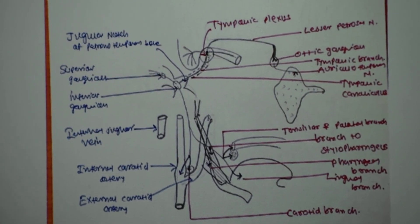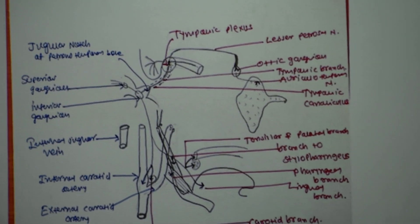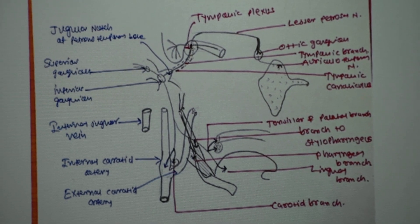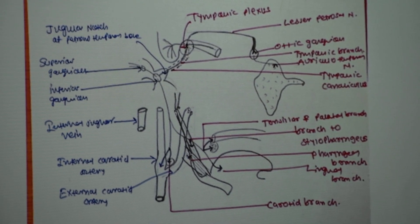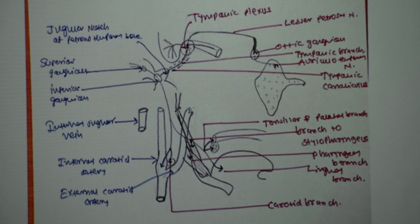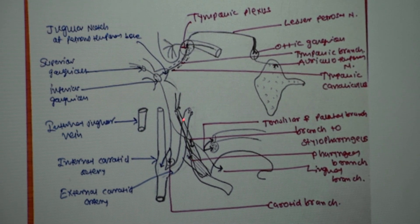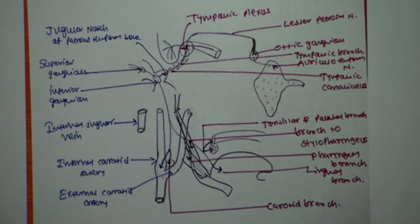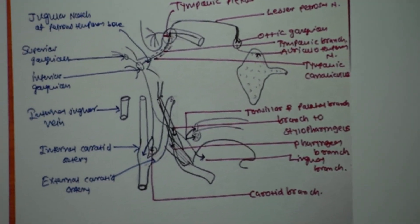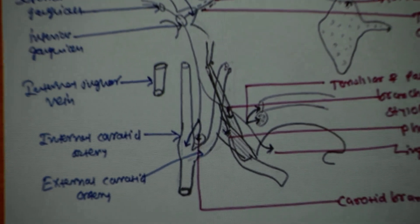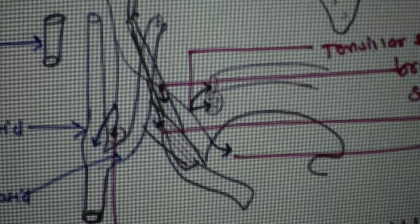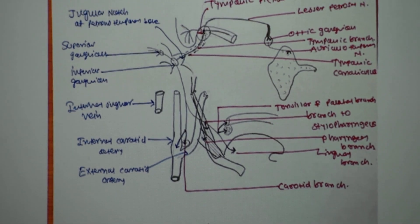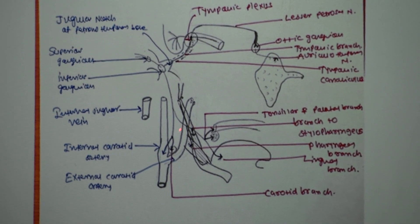So the glossopharyngeal nerve has a dual role in the posterior one-third of the tongue: it carries general sensation as well as special sensation, which is taste sensation. It gives muscular branches to the stylopharyngeus muscle. All pharyngeal muscles are supplied by the pharyngeal plexus, except stylopharyngeus, which is supplied by the glossopharyngeal nerve.